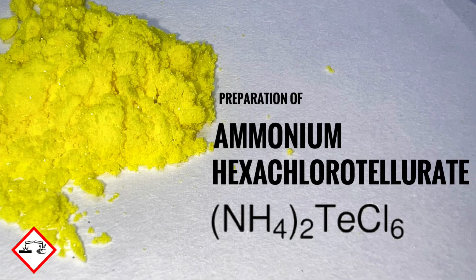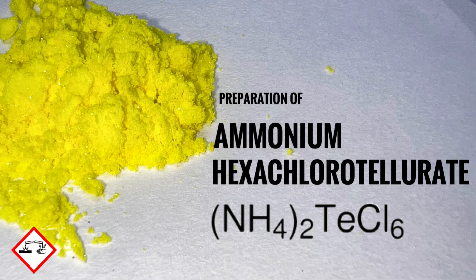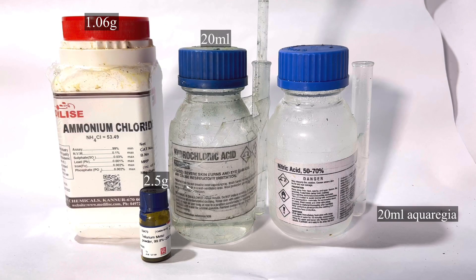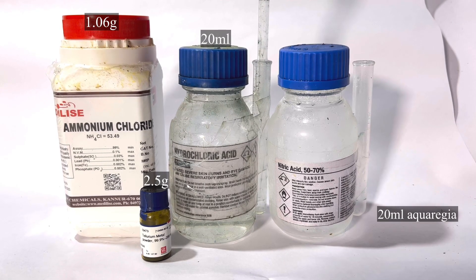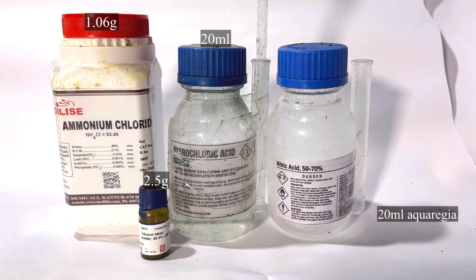Hello friends, in this video we will make ammonium hexachloro tellurate, which is a beautiful colored compound of tellurium. Chemicals required for this preparation are 2.5 grams of tellurium metal, just enough aqua regia to completely react with tellurium.